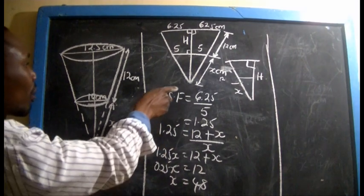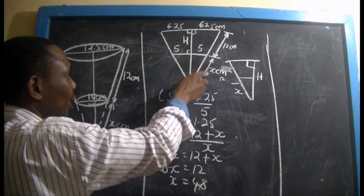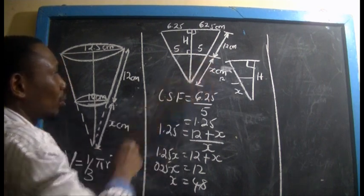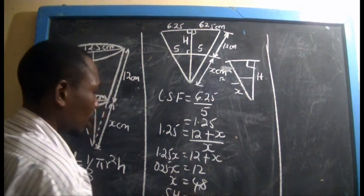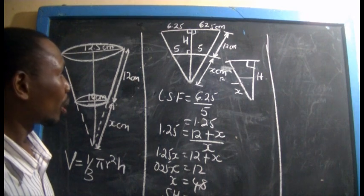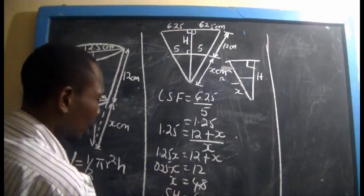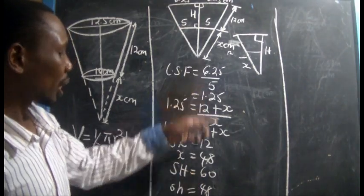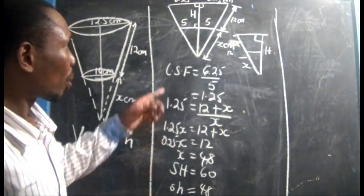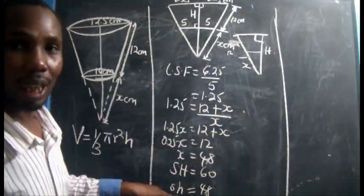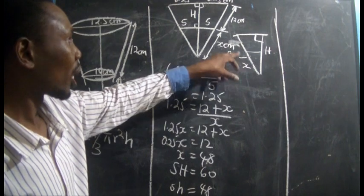So the slant height of the small triangle is 48 centimeters. The slant height — SH — for the bigger triangle is 60 centimeters, which is also the hypotenuse of the larger triangle. And SH in small caps is the hypotenuse for the small triangle, which is 48 centimeters.